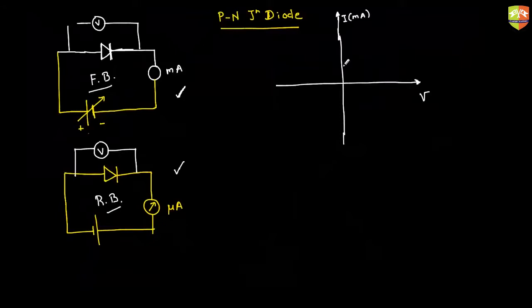Now, if I supply a very small voltage in forward bias — say 0.01 volt — will there be any current?